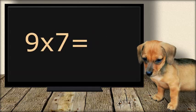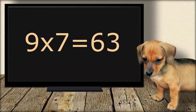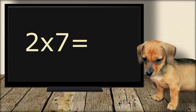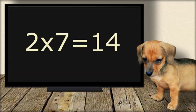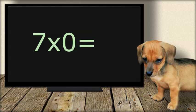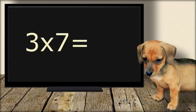Nine times seven equals sixty-three. Two times seven equals forty. Fourteen. Seven times zero equals... zero.